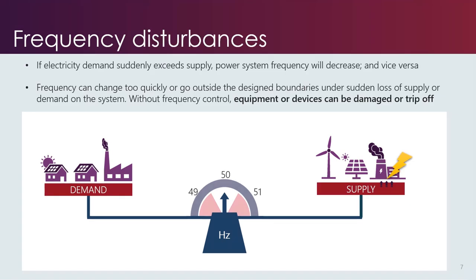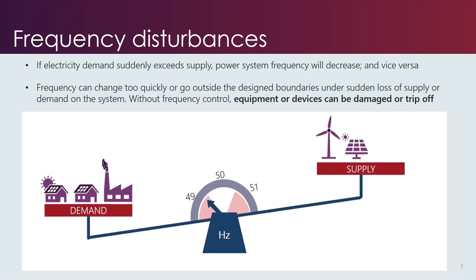In addition to natural variations, we can also have sudden frequency disturbances on the system, which generally occur when we lose a very large load or generating unit. Losing a very large coal unit will lead to a scenario of imbalance. Frequency drops into the red zone, and when this happens, or if the rate of change of frequency is too fast, certain parts of the system can be damaged or will trip themselves off to prevent damage. To prevent this, we use what are called frequency control services to manage frequency disturbances.